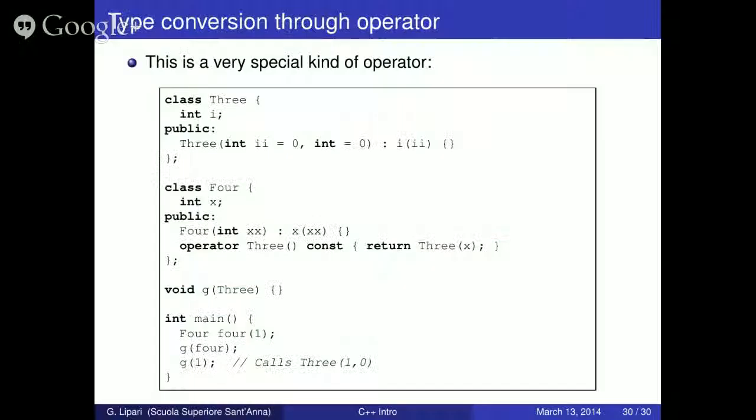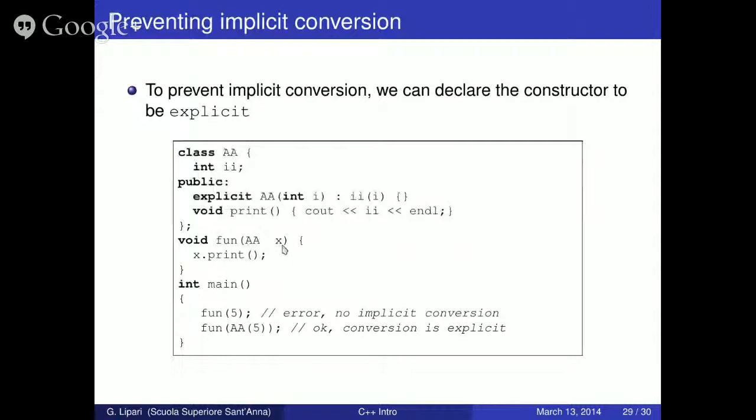So we have seen type conversion using constructors. And of course, if fun takes a constant reference, then there is no way to convert — this only works if it is actually asking for an object.